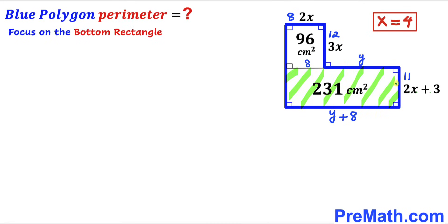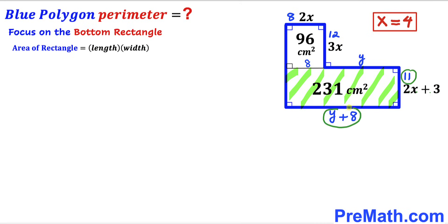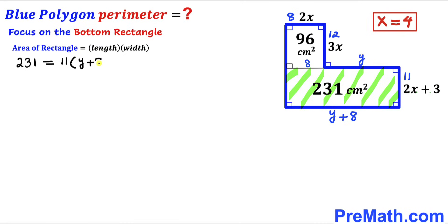Focusing on the bottom rectangle, let's recall the area formula once again: area equals length times width. In our case the dimensions are 11 and y plus 8, and the area of the bottom rectangle has been given as 231. So we set up: 231 equals 11 times (y plus 8).